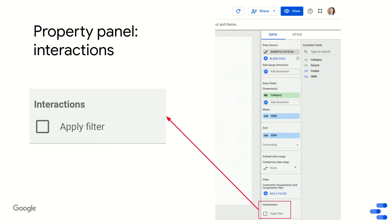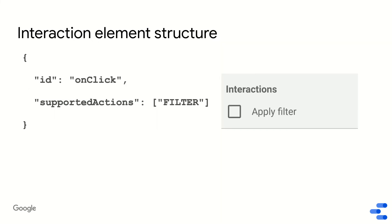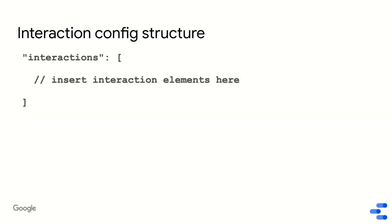The last thing we're going to talk about is interactions — specifically whether the 'Apply Filter' checkbox shows up in your property panel. You define that by including an interaction element inside your config. This interaction element has an ID and a list of supported actions. If supported actions contains the enum 'filter,' the apply filter checkbox will appear and your community visualization will be able to act as a chart interaction filter. The interaction config is just a list of these interaction elements, with no intermediate section grouping unlike data and style.